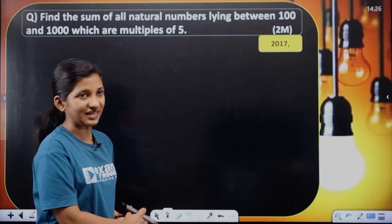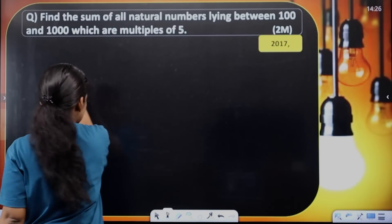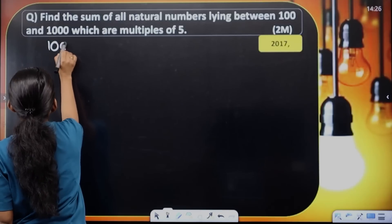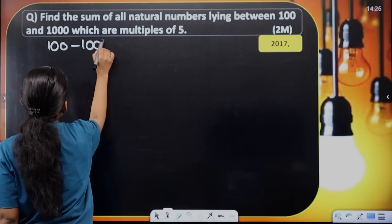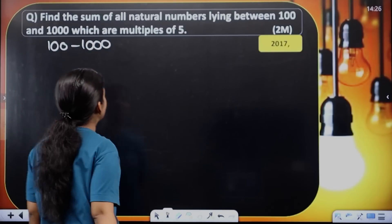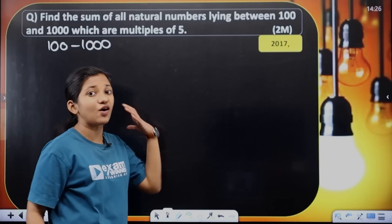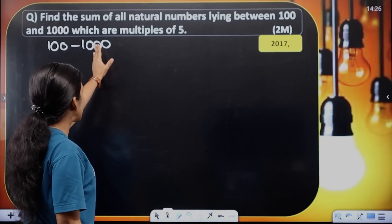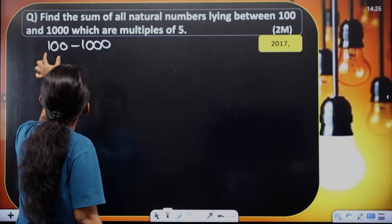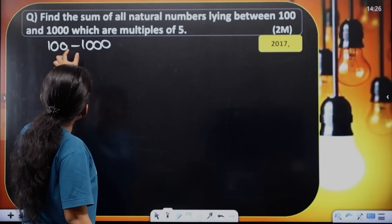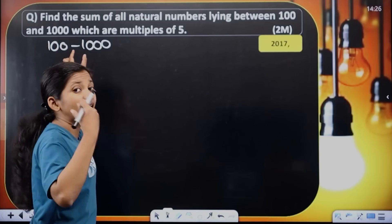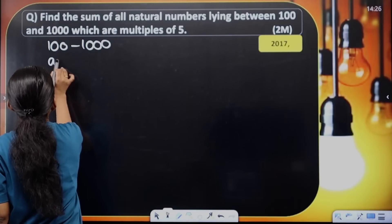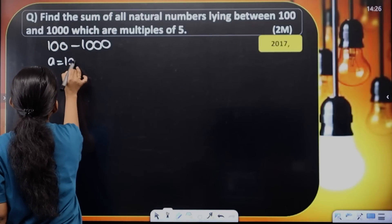We will find the sum of numbers from 105 to 995 that are multiples of 5. The first term a equals 105, since 5 is a multiple and 10001 comes into it. A equals 105.